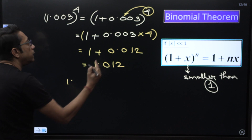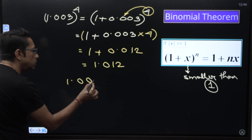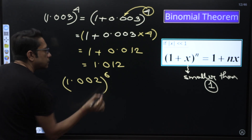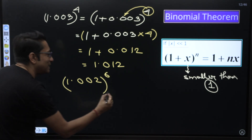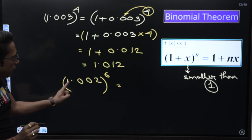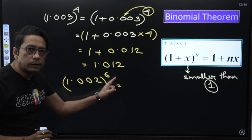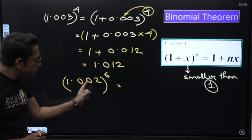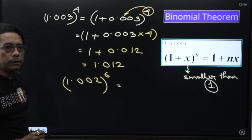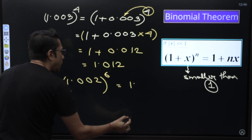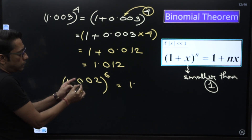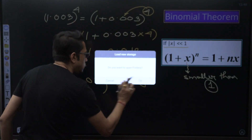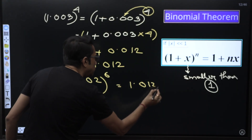Now try this directly: 1.002 to the power 6. We can write this as 1 plus 0.002 to the power 6. So applying the formula: 1 plus 6 times 0.002. That becomes 1 plus 0.012, which gives 1.012 as the answer.